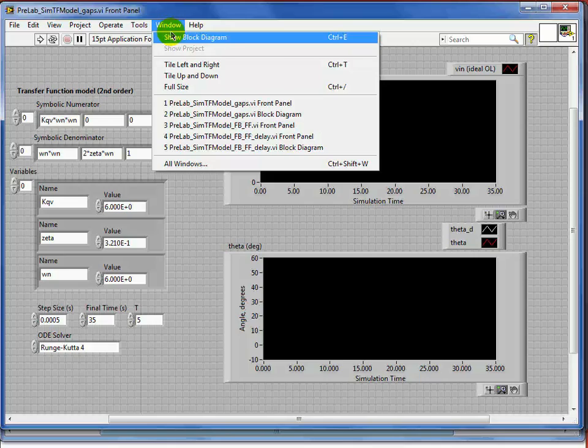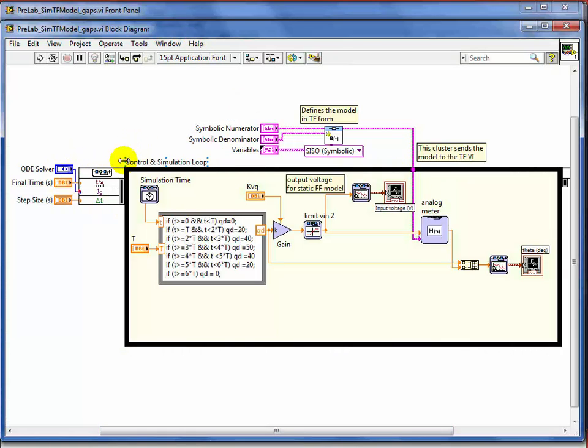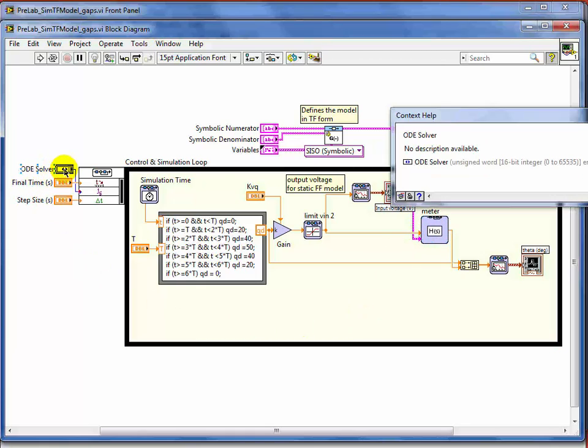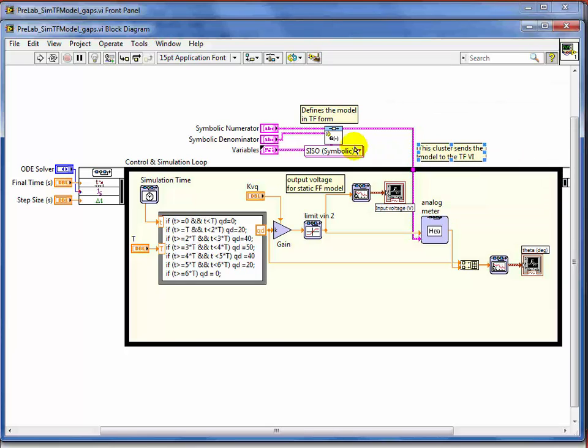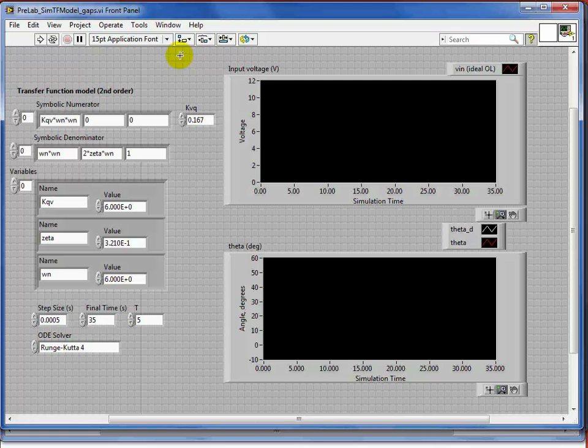Let's jump back to the block diagram so you can see what everything is there. This is a control design simulation loop, so you're actually solving things here, because when you create a transfer function model here, it does simulate those models. You specify a solver and so on. I think everything's defined.